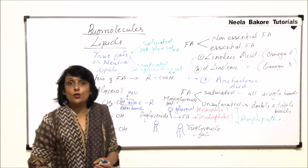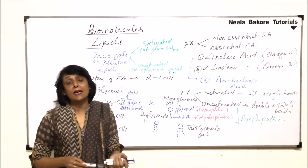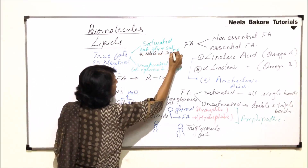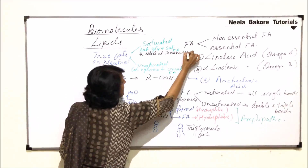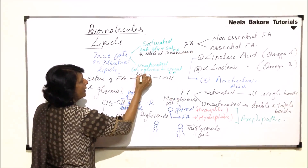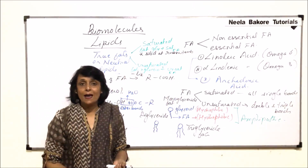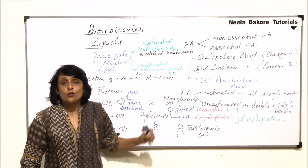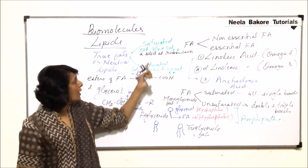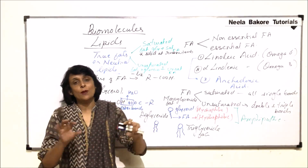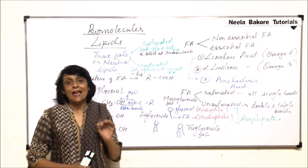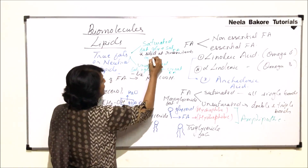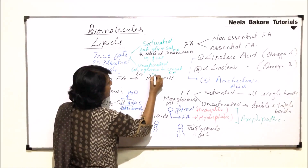How do we differentiate between the two? Saturated fats are solid at room temperature, whereas unsaturated fats are liquid. A simple example: saturated fat — ghee, which solidifies at room temperature; unsaturated fat — oil, which remains liquid at room temperature. This is one simple method by which we can identify saturated versus unsaturated fat.